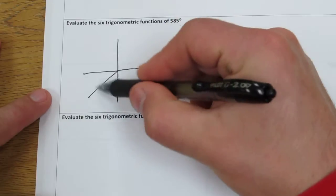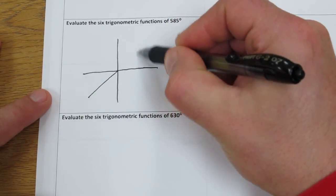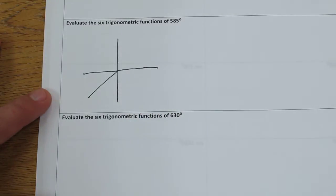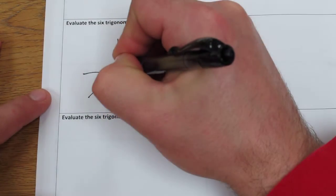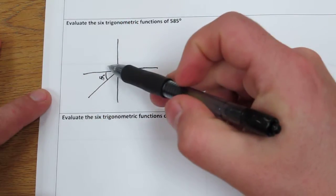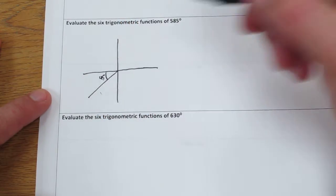So again, 360, 450, 540, and now we're at 585. But here's the key: the reference angle is 45 degrees right there, because we went 45 degrees past the x-axis.